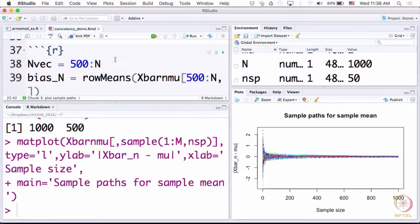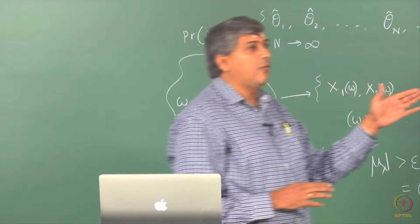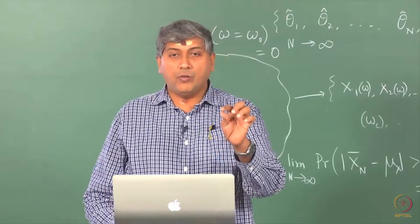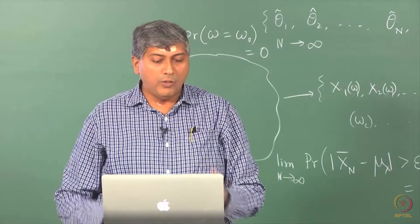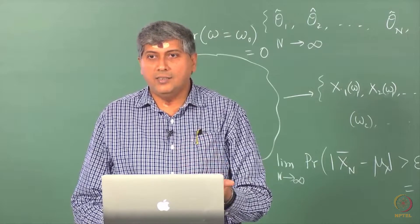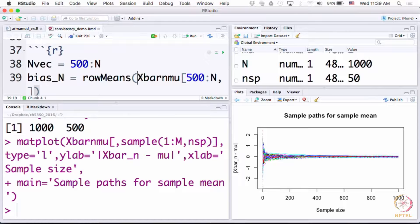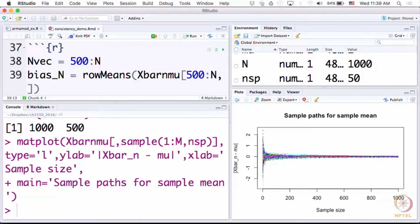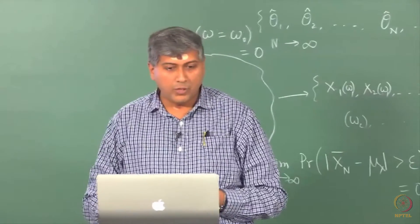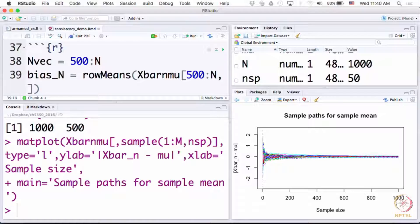We can compute the bias and I have done that here. All I am doing here is I am not considering small sample sizes. Remember, we have simulated from 1 to 1000 max. I am looking at sample size of 500 or more. And I am plotting the bias for each sample size. Essentially, what I have to do is I have already computed the difference between x̅ and the truth, and all I have to do is now take the average across the realizations. x̅ minus μ is arranged with sample size along rows and each column corresponding to a realization. So what am I doing here? I am computing the bias. And I am calculating the average of this x̅ minus μ across realizations.